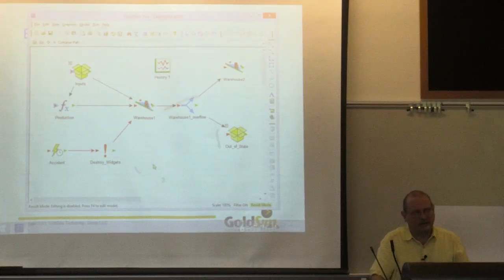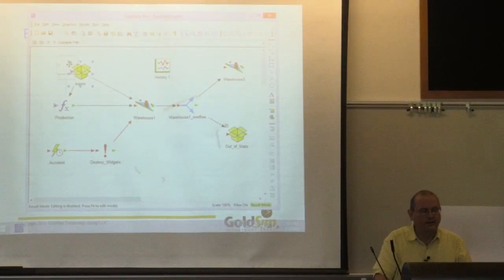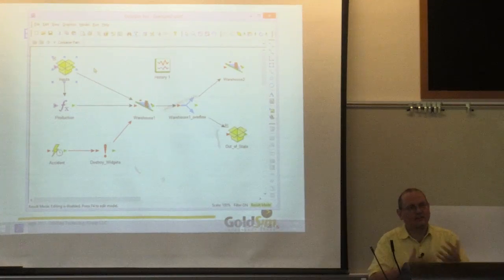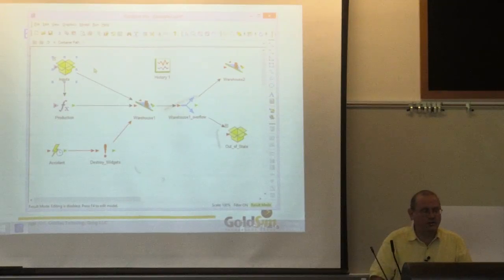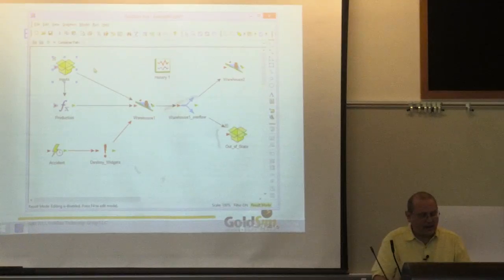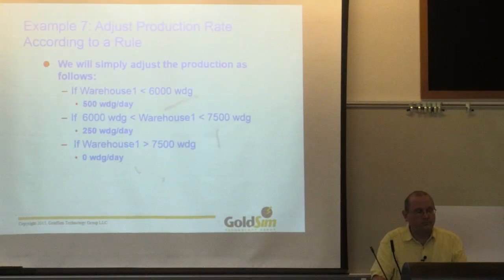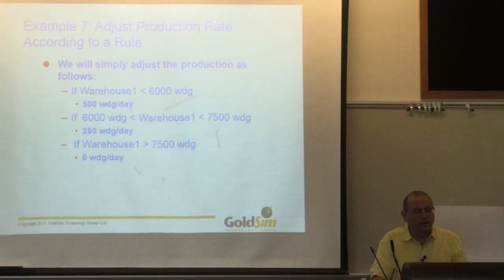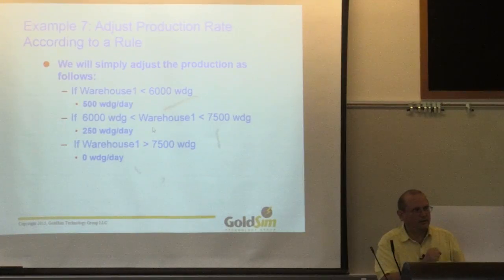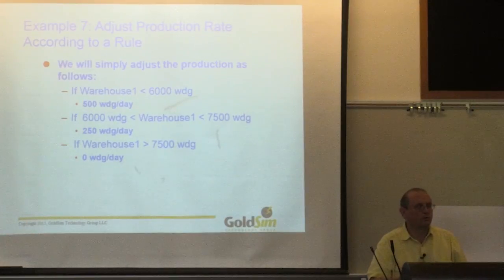So that's what accidents are about. The last thing I want to talk about is adjusting that production rate. Remember we talked about feedback loops earlier today—we're going to adjust the production rate according to some rule.